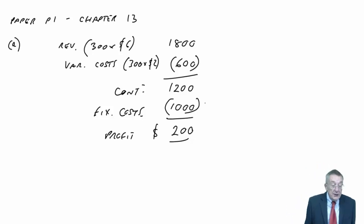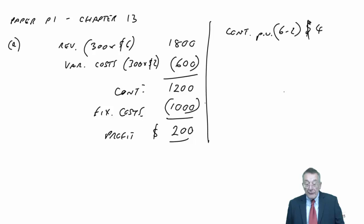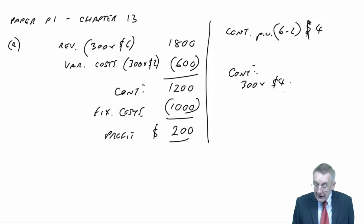If all they wanted was the budgeted profit, I could have done it faster, because the contribution per unit is $6 less $2, so every unit gives $4 contribution. Therefore, the budget contribution in total is 300 units at $4, which is $1,200. The fixed costs are $1,000, so the profit is $200.